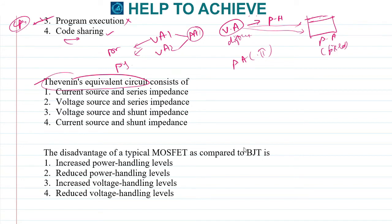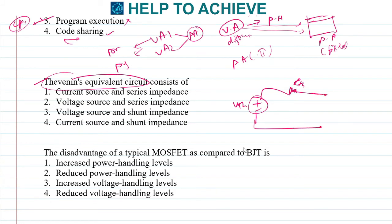From network theory, the Thevenin equivalent of a two-port network is a voltage source in series with a resistance (R_Thevenin). Any two-port network can be replaced by this equivalent: a voltage source and a series resistance. This is the Thevenin equivalent and the correct answer.